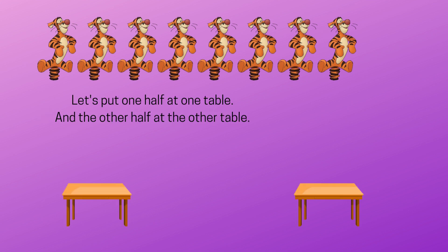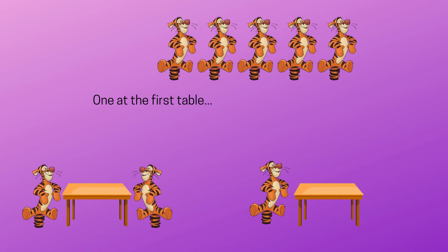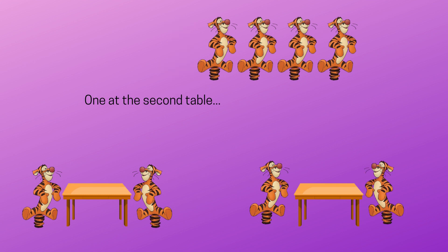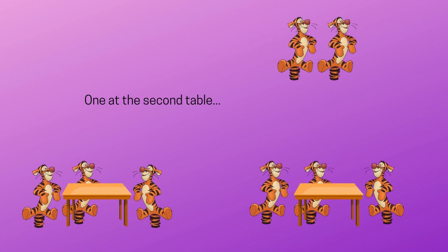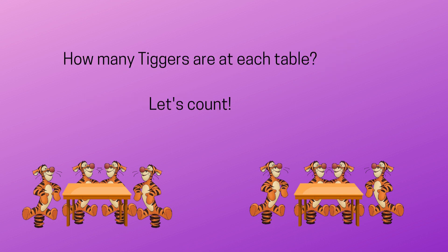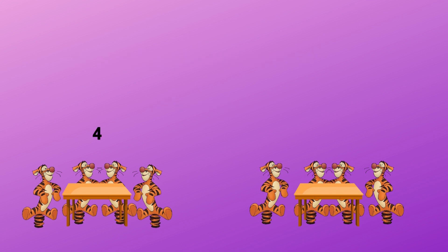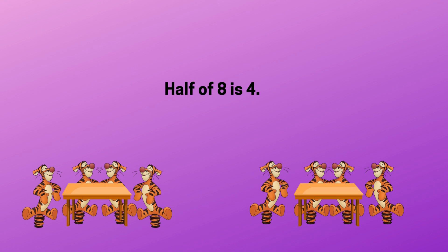Let's put one half at one table and the other half at the other table, alternating one at the first table, one at the second table, until all eight are placed. How many are at each table? Let's count. Four and four. There are four at each table. Half of eight is four.